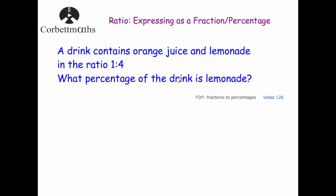Now we're going to write a ratio as a percentage rather than a fraction. I'd recommend watching video 126 on corbettmaths.com which explains how to write fractions as percentages. The question says: a drink contains orange juice and lemonade in the ratio one to four. What percentage of the drink is lemonade? There's one part orange juice and four parts lemonade, so five parts altogether. We're looking for lemonade, which is four parts, giving us the fraction four fifths. We could picture it as O-L-L-L-L: four parts lemonade out of five total.